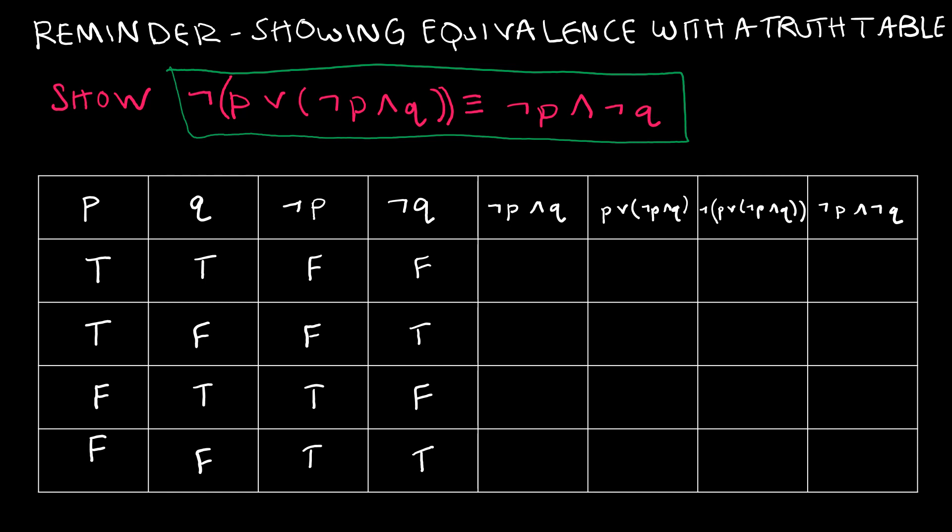So the first thing I did is I went ahead and created the truth table and did the easy parts. I made my P and Q column and that's always that first part and then I filled in some of the next couple of columns just because they were easy, they're just negations so we just took whatever was in P and negated it whatever was in Q and negated it.